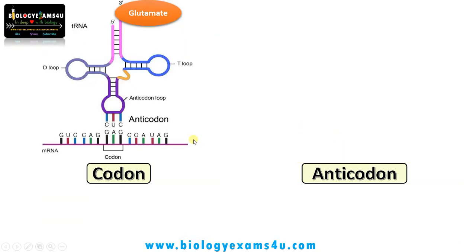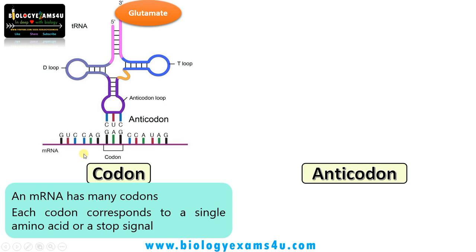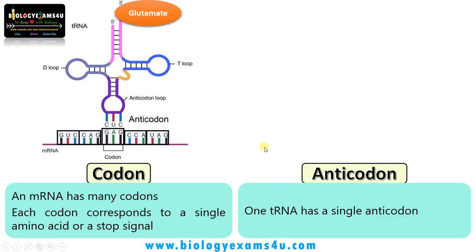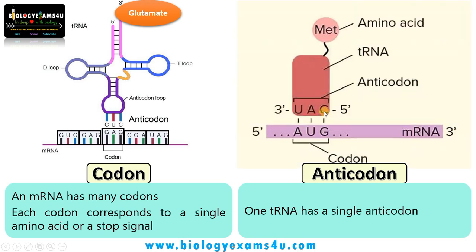The third difference is that an mRNA has many codons, and each codon corresponds to a single amino acid or a stop signal like UAA, UAG, etc. For example, the codons on this mRNA are GUC, CAG, GAG, CCU, and UAG. Each corresponds to an amino acid — for instance, GAG calls for glutamate. In the case of the anticodon, one tRNA has a single anticodon. For AUG, its complementary anticodon sequence is UAC, so this tRNA has a single anticodon UAC.